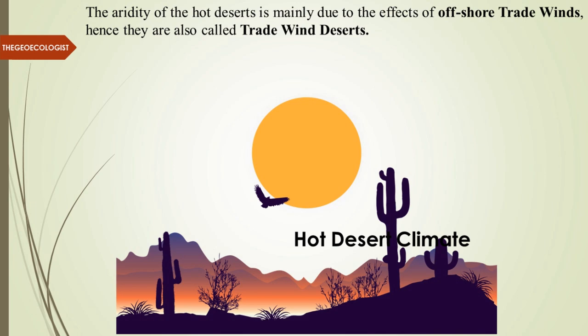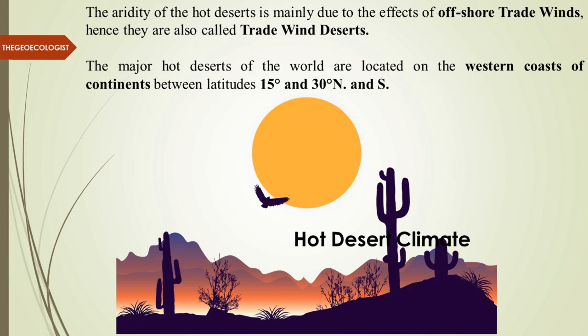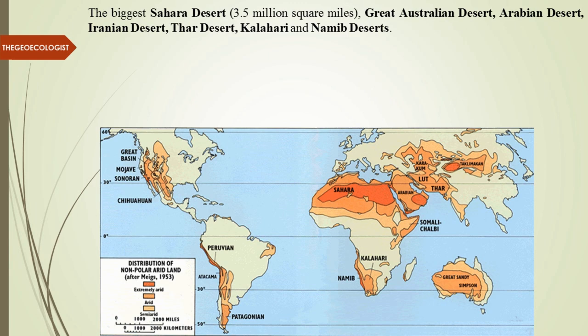Hot deserts are largely influenced by offshore trade winds. The major hot deserts of the world are located on the western coasts of continents, spatially between 15 to 30 degrees north and south. This is an important point that has been asked in many competitive exams.